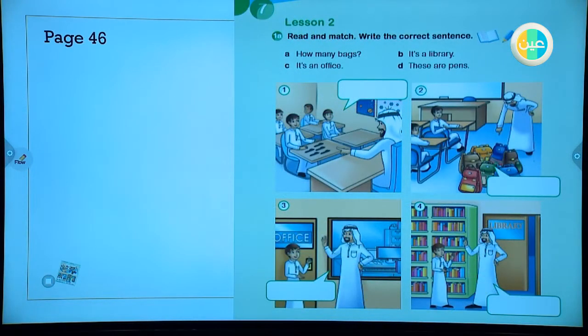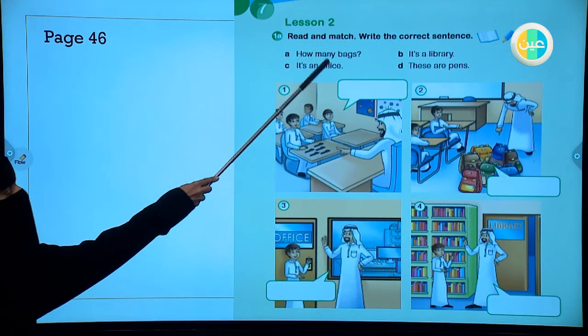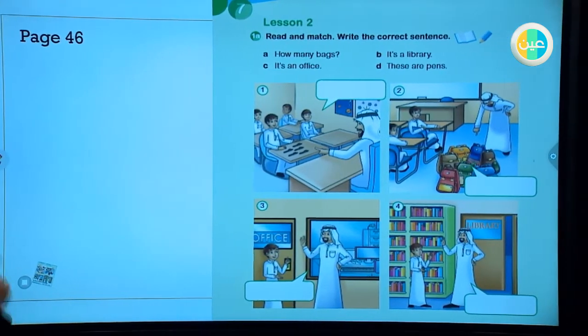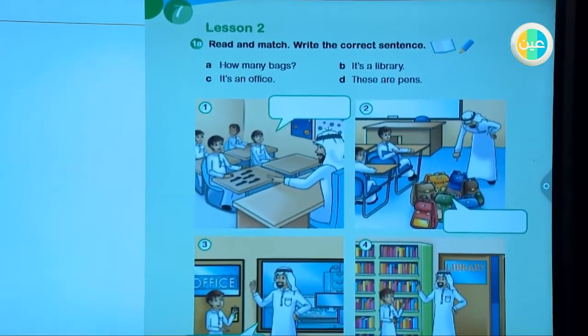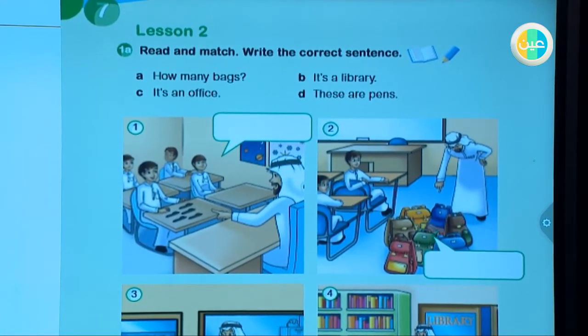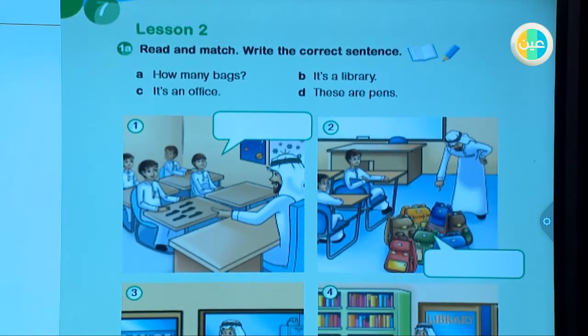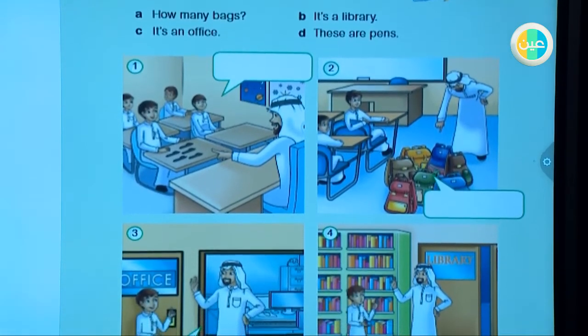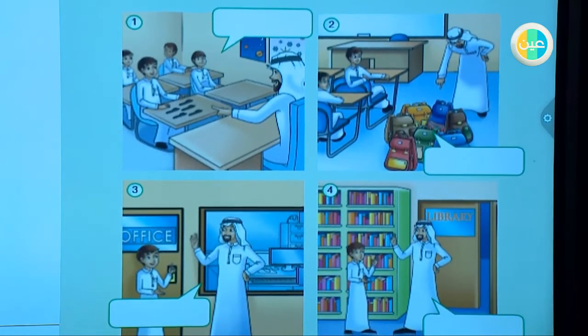This is page number 46. Look at it. In this activity we are going to read first and match, then you will write the correct sentence. After that you will listen and check your answer. Number A: How many bags? Number B: It's a library. Number C: It's an office. Number D: These are pens.